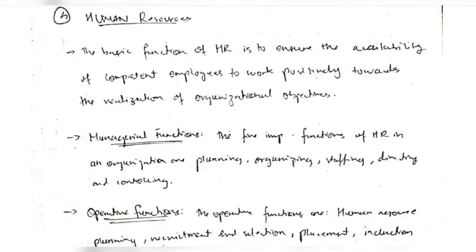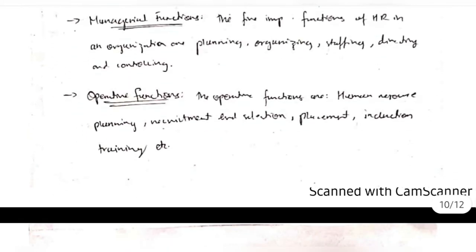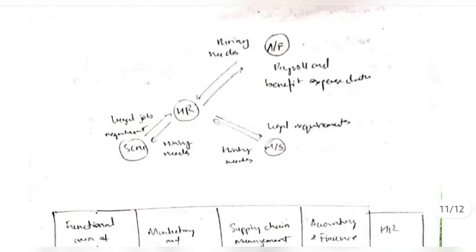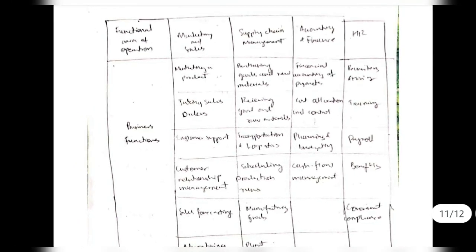Human resource is responsible for reducing unemployment in the country by working positively towards the training of people. The two main functions are managerial functions and operative functions. The five important managerial functions of HR are organization and planning, organizing, staffing, directing, and controlling. Operative functions include human resource planning, recruitment and selection, placement, induction, and training. These are the connections from HR to accounting and finance, marketing and sales, and supply chain management.